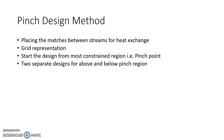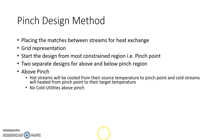In both regions — above pinch and below pinch — we start from the most constrained area, taking both hot and cold streams at the pinch and moving away from the pinch point toward the source temperature for hot streams and target temperature for cold streams. We'll understand this better when we look at the grid diagram. Two separate designs are made: one for above pinch and one for below pinch.